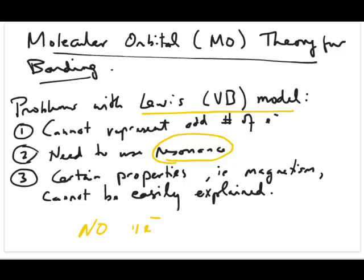But resonance structures are not real. What we see in the experiment is the average structure. But we have to include in the Lewis model this concept called resonance in order to be able to explain why we see this average structure.